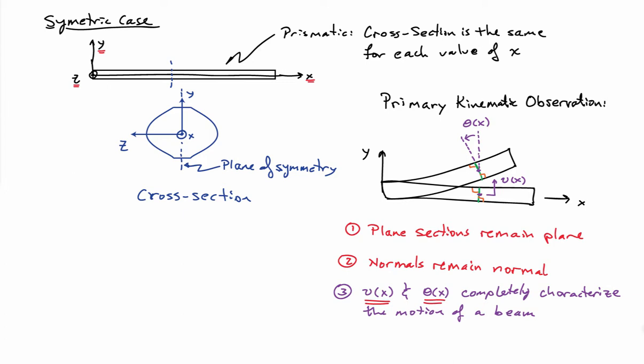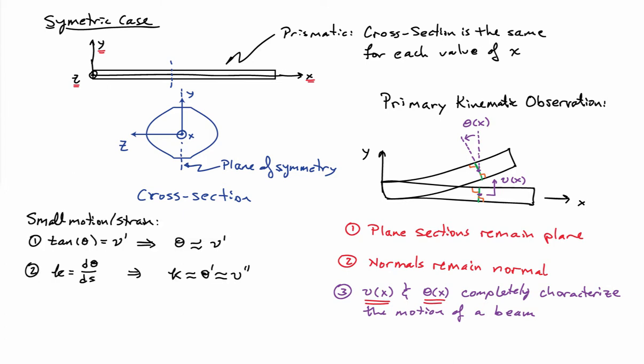The two fields — deflection and rotation — are linked to each other. Because of the normals remain normal assumption, there is a connection between the rotation of the cross-section and the deflection: the slope, the derivative of v with respect to x, equals the tangent of the angle. Assuming small deformation, we can approximate the tangent with the argument itself, so the rotation of the cross-section is simply the slope of the deflection curve.